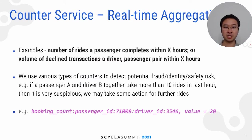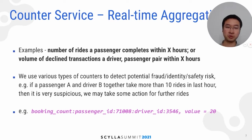Here is a counter example. Numbers of rides a passenger completes within X hours. We use many types of counters to detect potential risks. For example, if passenger A and driver B together take more than 10 rides in the last hour, then it is very suspicious and we may take some actions for further rides.